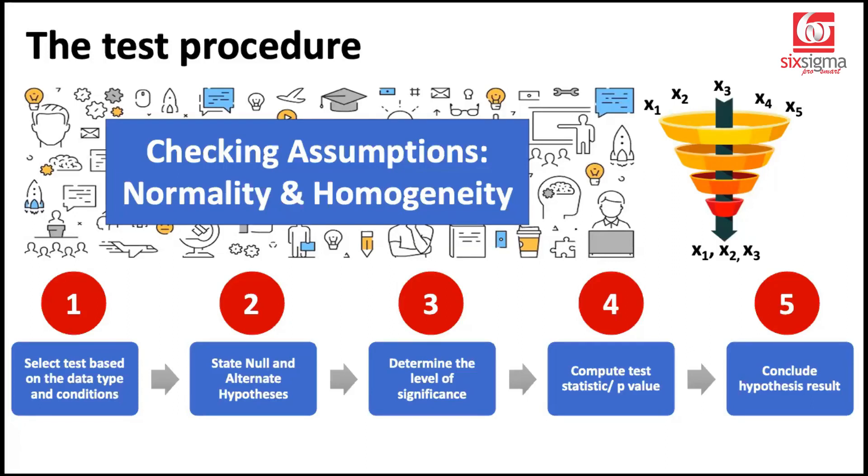Hello and welcome. So far in our hypothesis testing journey, we have seen that most of the tests require some assumptions to be satisfied. Two such assumptions which have consistently appeared in almost all the tests were the assumptions related to normality and the assumptions related to homogeneity of variances. Now if you notice, an assumption itself is a hypothesis. So interestingly to check these assumptions, we have separate hypothesis tests.